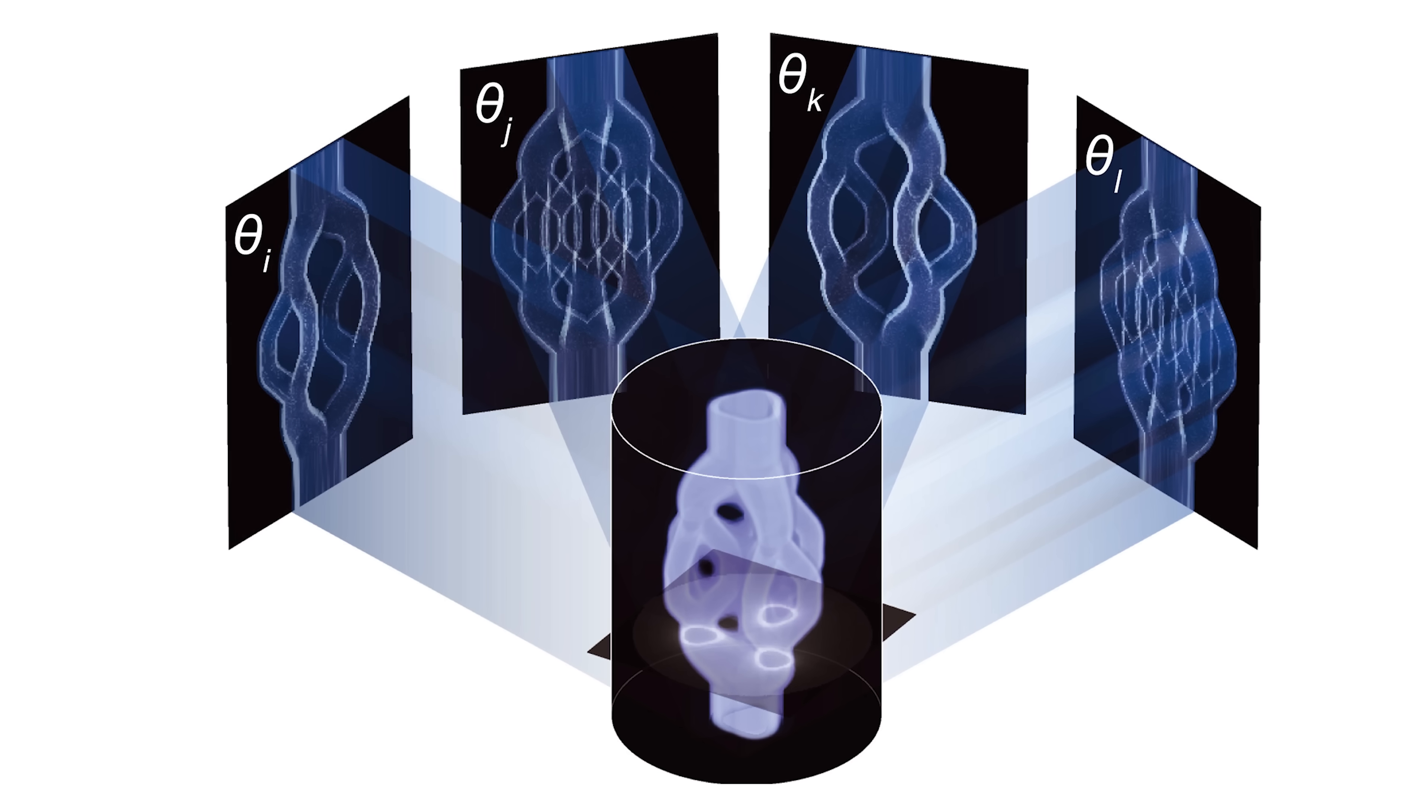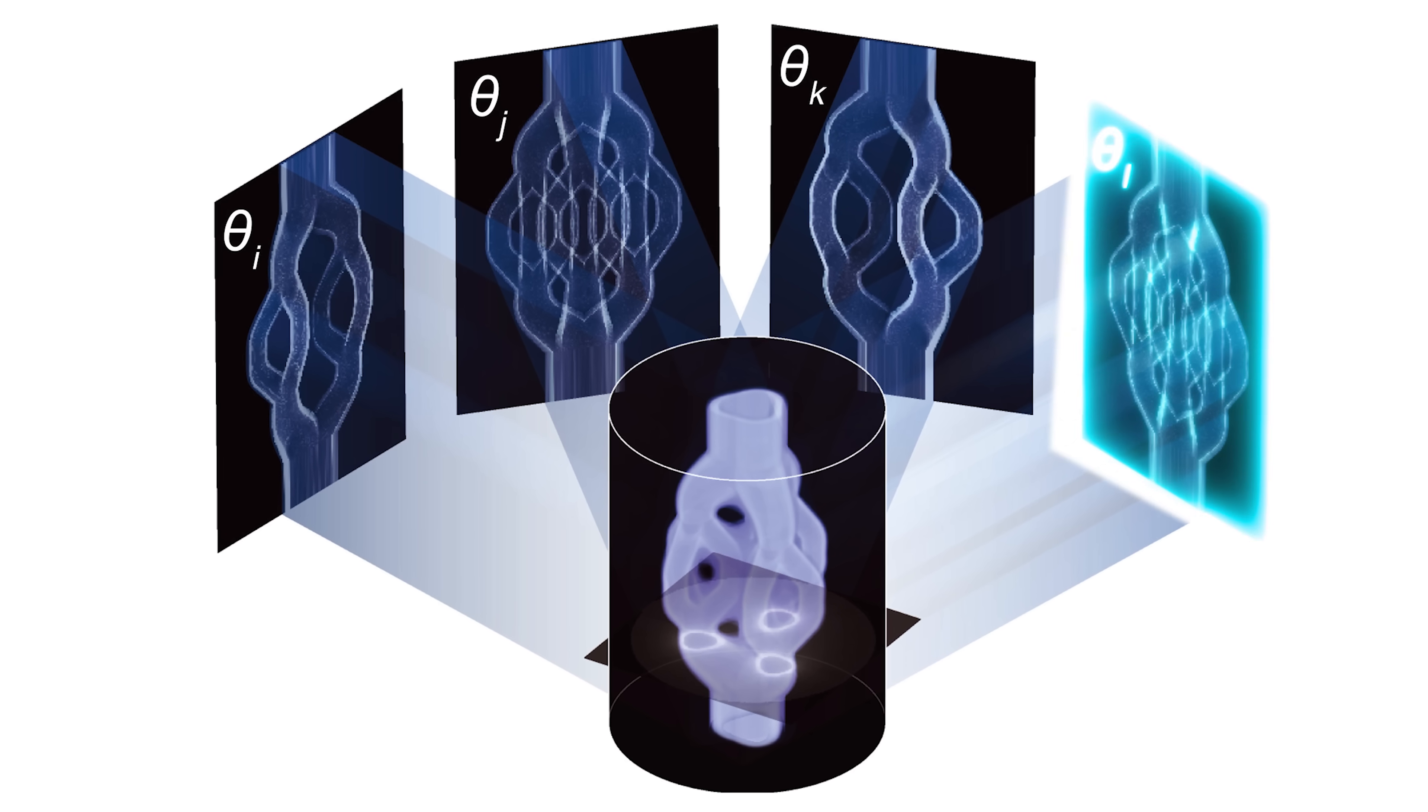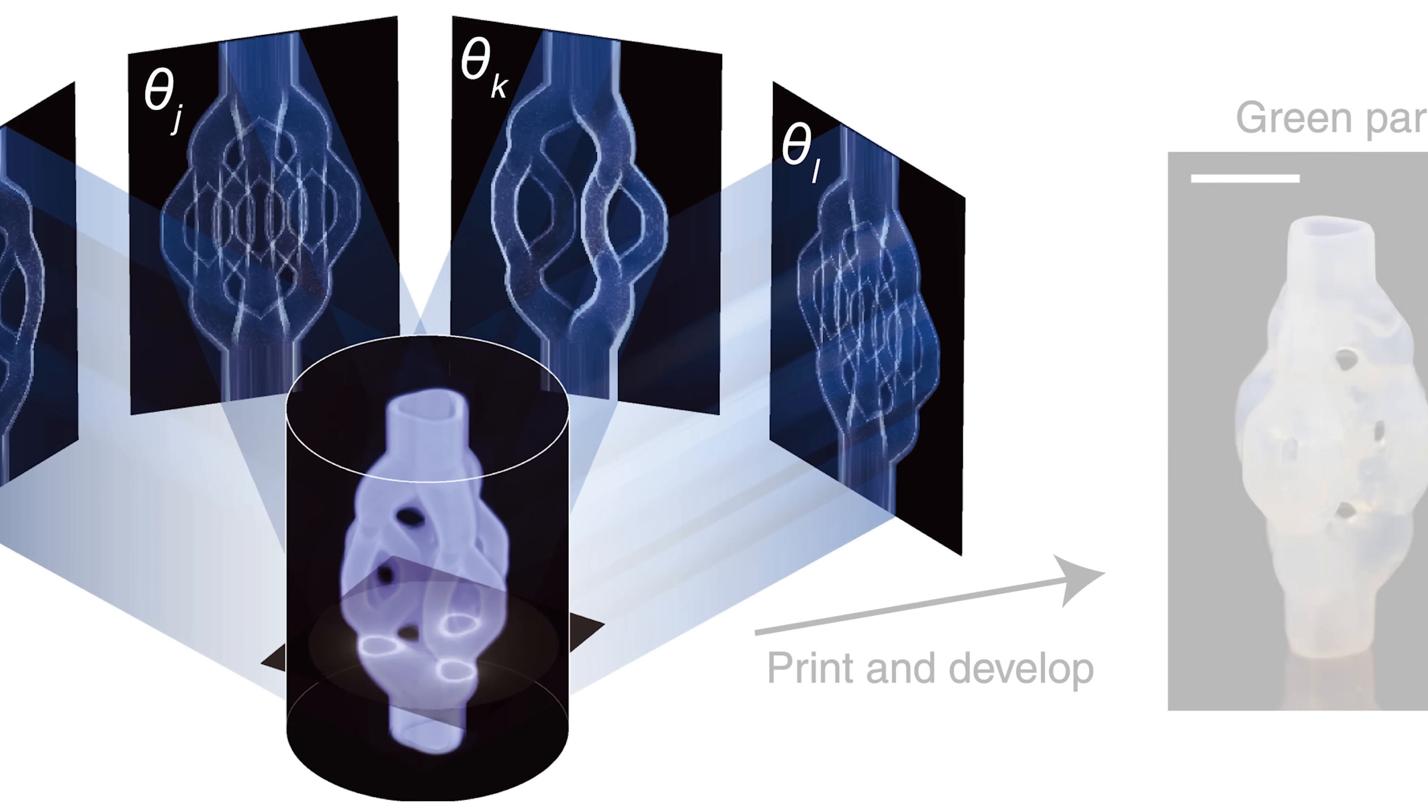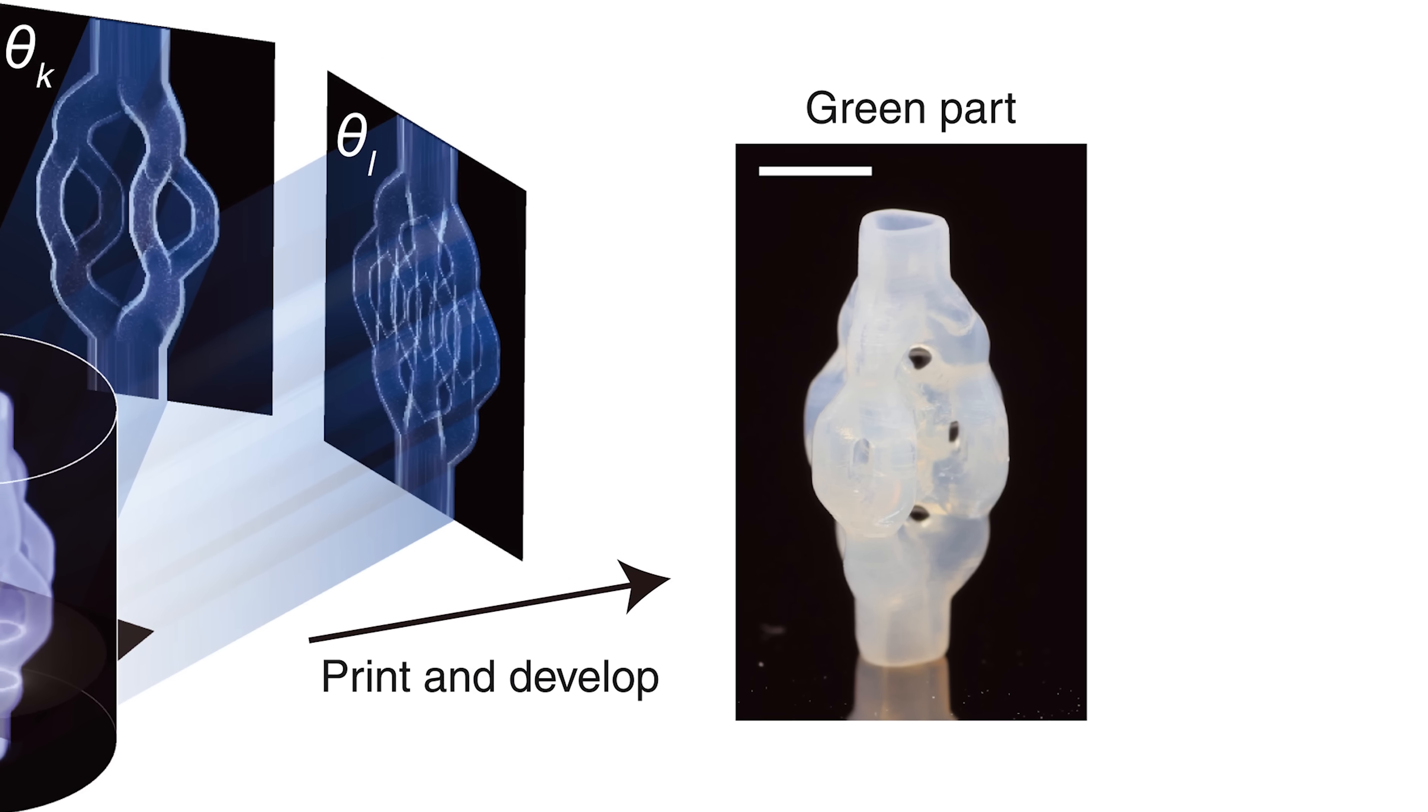So the polymer, once it's cross-linked, holds these particles together in what we call a green part, which consists of the polymer and the silica.